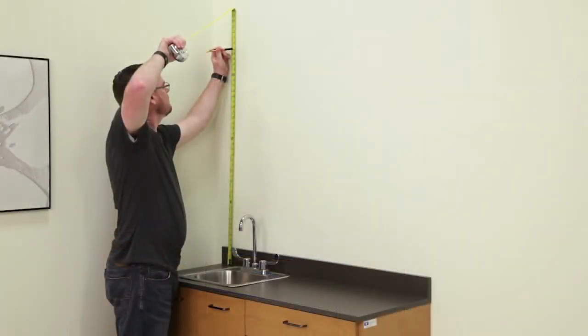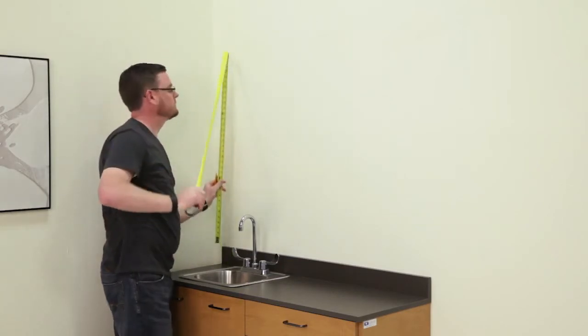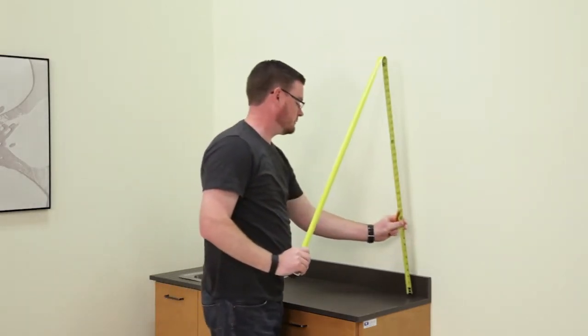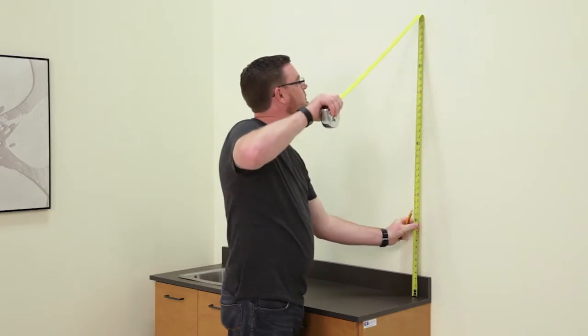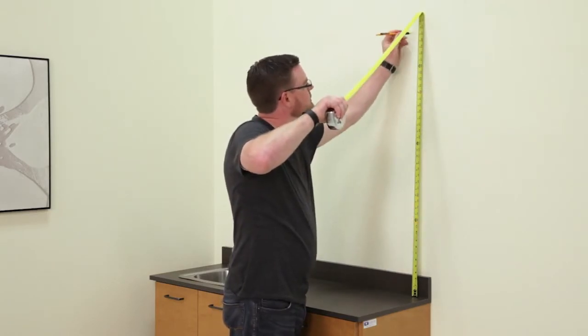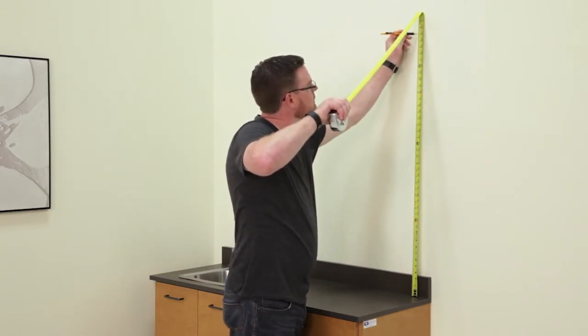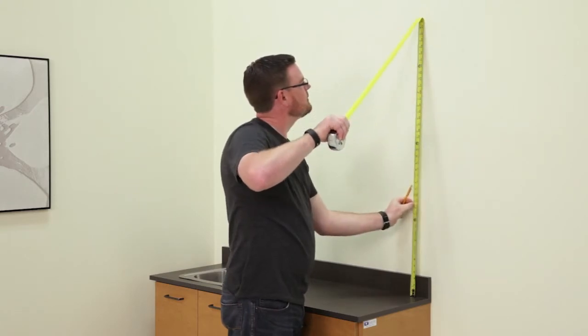Wall cabinets are generally hung directly over the base cabinets with an approximate gap of 19 inches between a countertop and the bottom of the wall cabinets. To achieve this spacing, measure 41 inches from the countertop and mark a spot on the wall to position the cabinet rail.